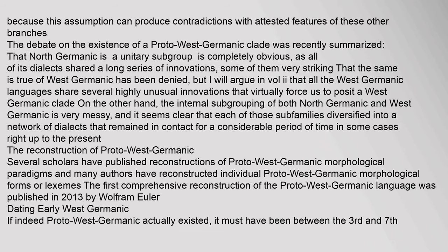Because this assumption can produce contradictions with attested features of these other branches, the debate on the existence of a Proto-West Germanic clade was recently summarized: that North Germanic is a unitary subgroup is completely obvious, as all of its dialects shared a long series of innovations, some of them very striking. That the same is true of West Germanic has been denied, but it has been argued that all the West Germanic languages share several highly unusual innovations that virtually force us to posit a West Germanic clade. On the other hand, the internal subgrouping of both North Germanic and West Germanic is very messy, and it seems clear that each of those subfamilies diversified into a network of dialects that remained in contact for a considerable period of time.